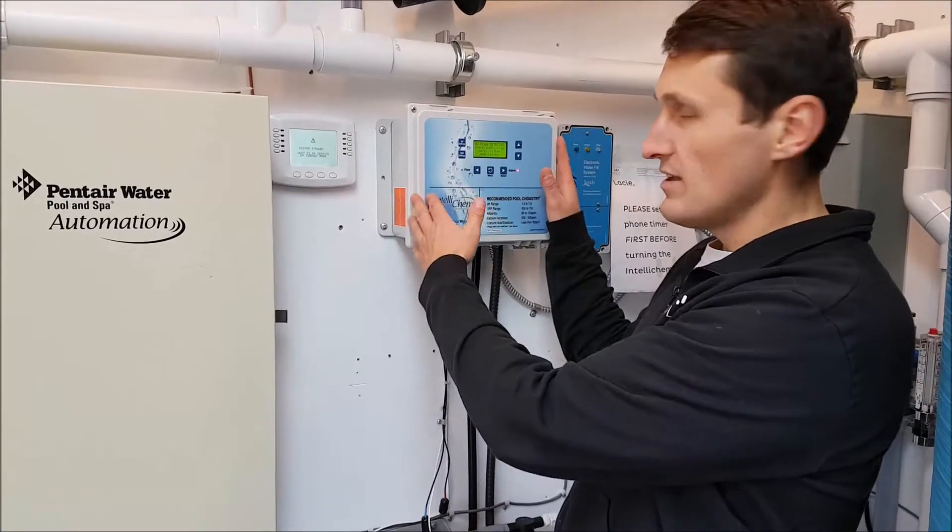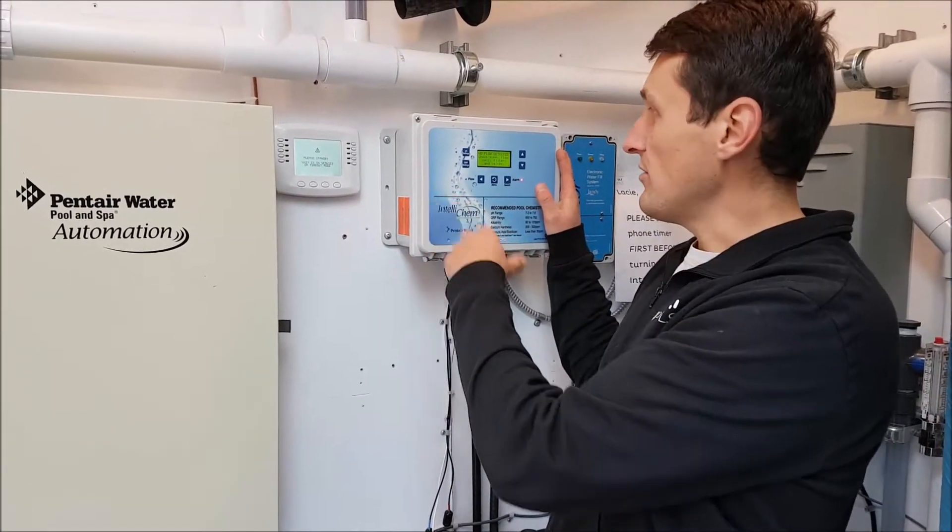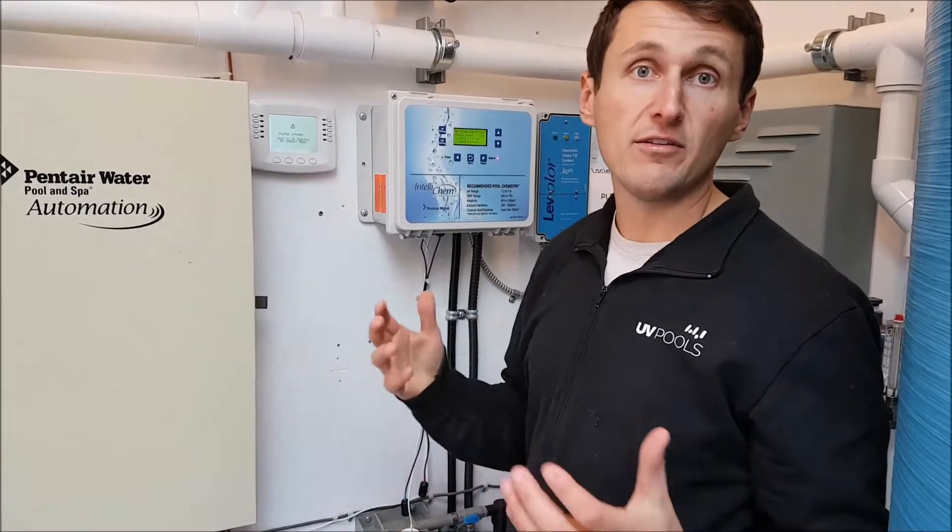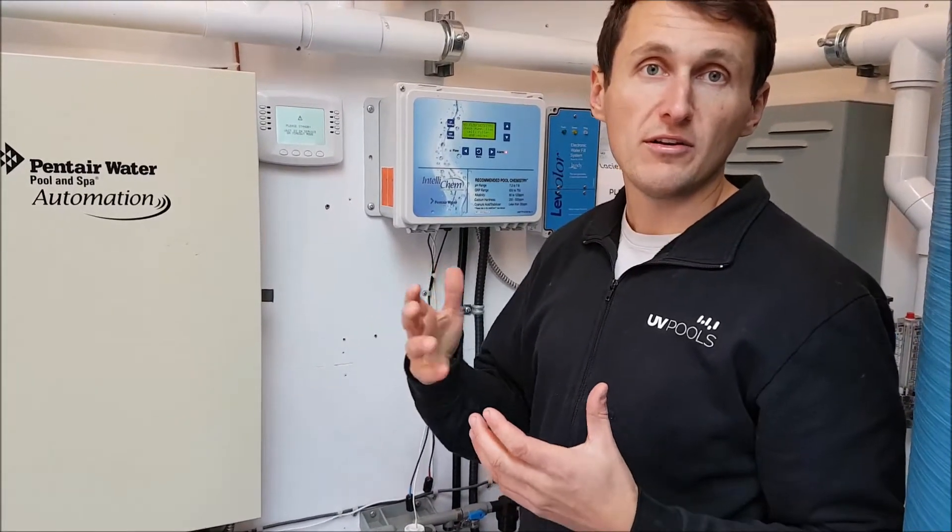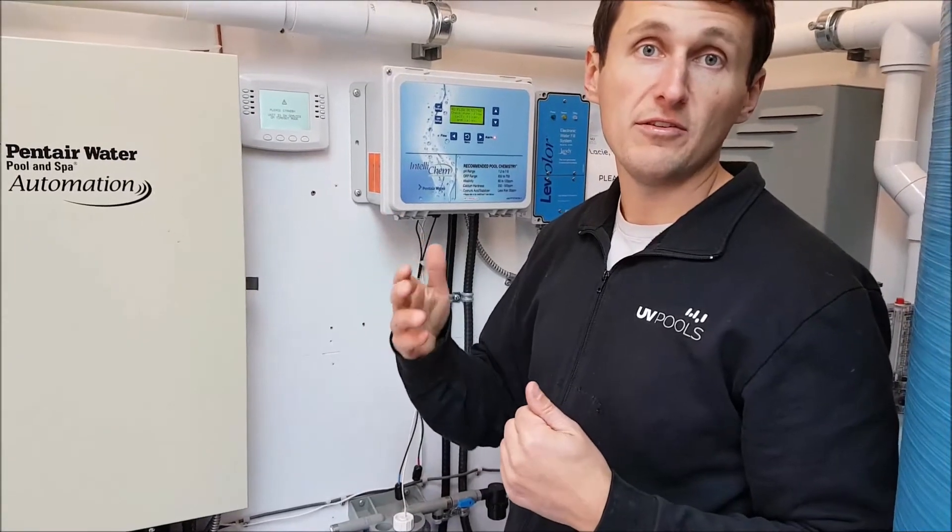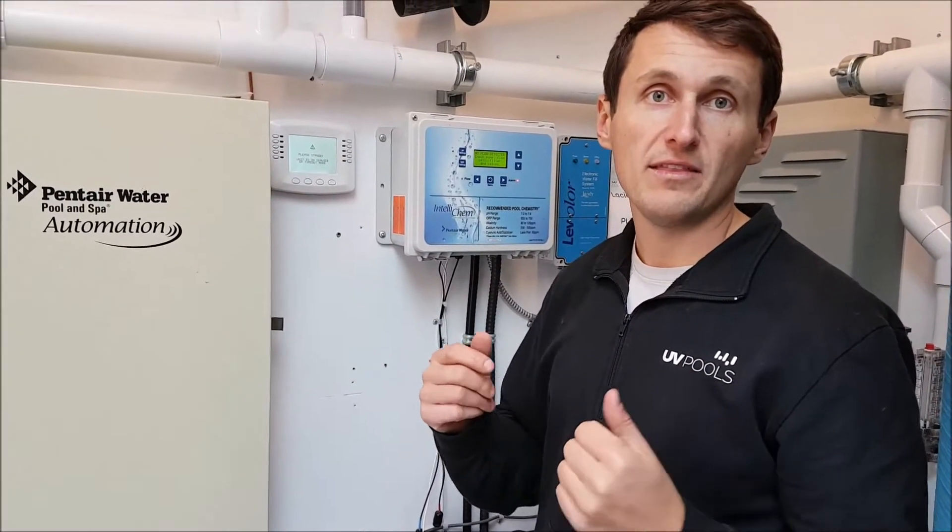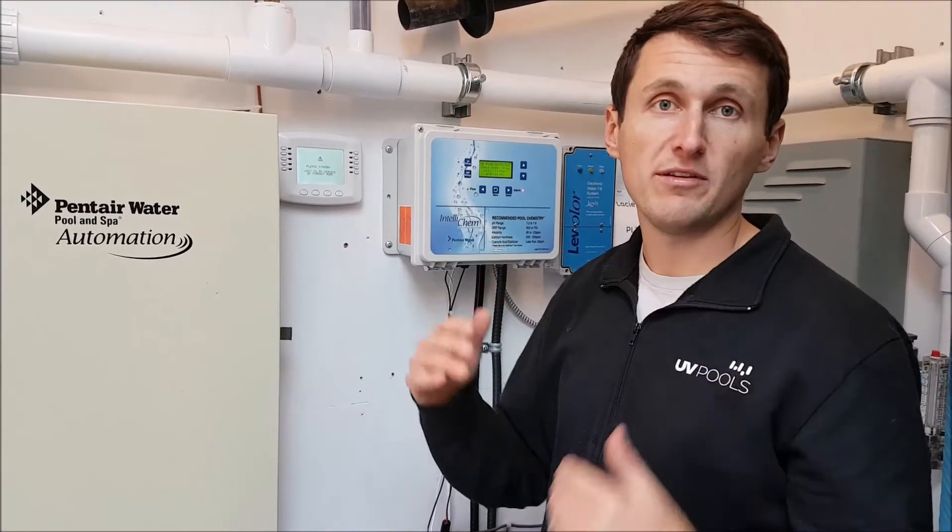What the IntelliChem unit does is it monitors and doses the proper amount of acid and chlorine to maintain your chlorine levels and to maintain your pH levels, so they're always within check and the amounts are always within range.